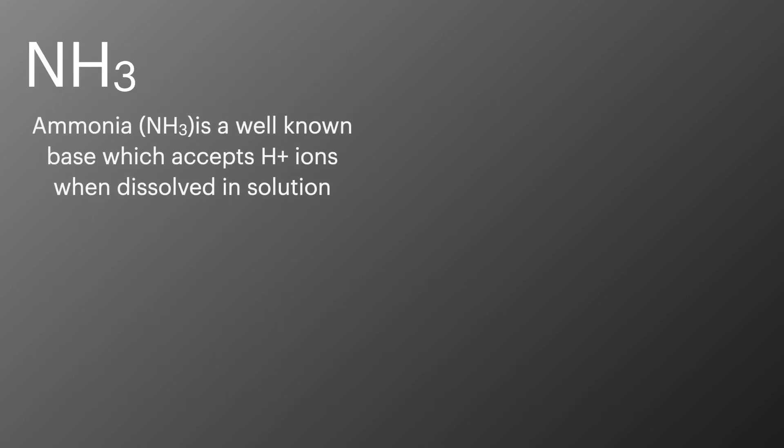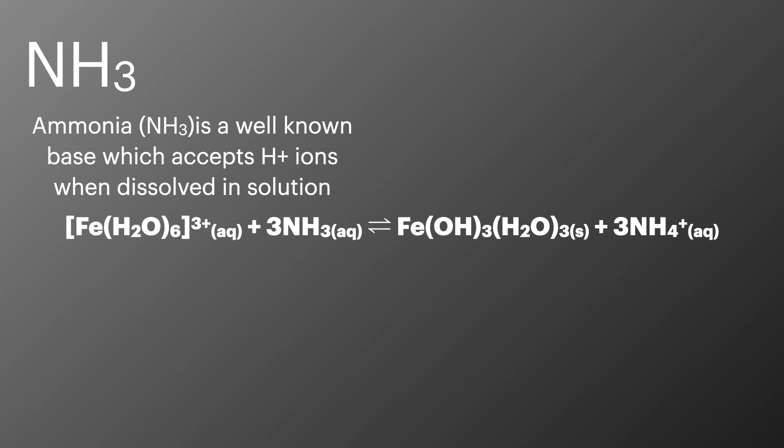If ammonia NH3 is added to solution it acts in the same way as adding hydroxide ions and removes the H plus, shifting the equilibrium to the right and eventually creating a solid precipitate. You may also remember from the episodes on transition metals, ammonia can be a ligand.